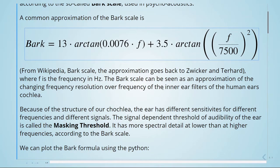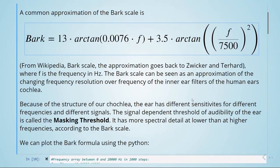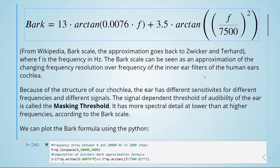Because of the structure of our cochlea, the ear has different sensitivities for different frequencies and different signals. The signal-dependent threshold of audibility of the ear is called the masking threshold. It has more spectral detail at lower than at higher frequencies according to the Bark scale.